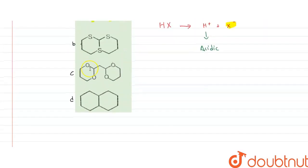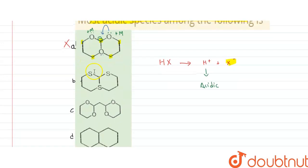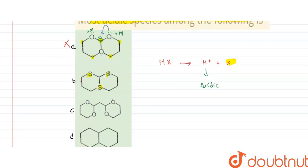Coming to option B, we can see that it is similar structure as compared to A, but the difference is that we have sulfur in the position of oxygen. So we know that oxygen is more electronegative than sulfur. So let me write, oxygen